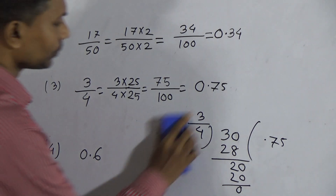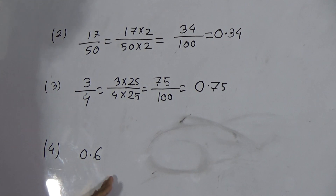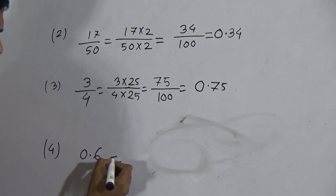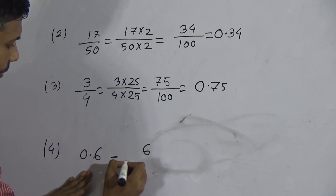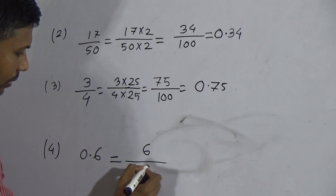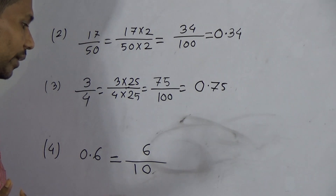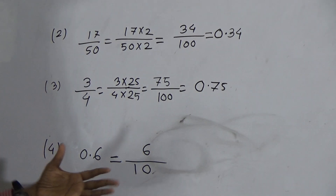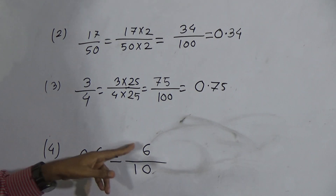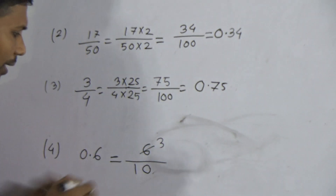Now question number 4: convert the decimal 0.6 into a fraction. First write the number 6, then for the decimal point write 1, and for each digit after the point write one zero — so you get 6 by 10. This is a fraction, but we can reduce it. Divide both numerator and denominator by 2: 6 divided by 2 gives 3, and 10 divided by 2 gives 5.